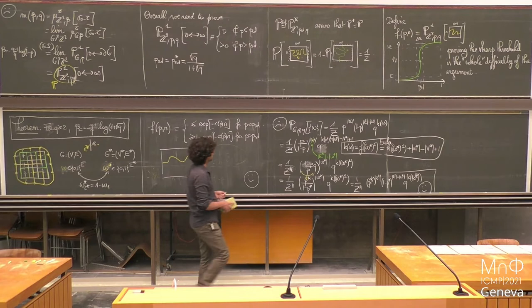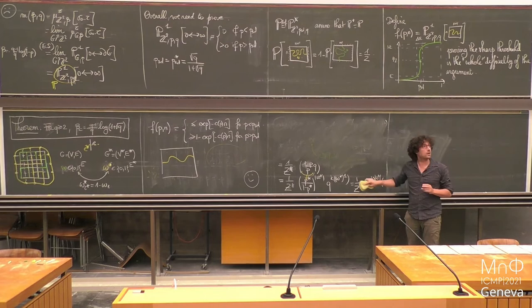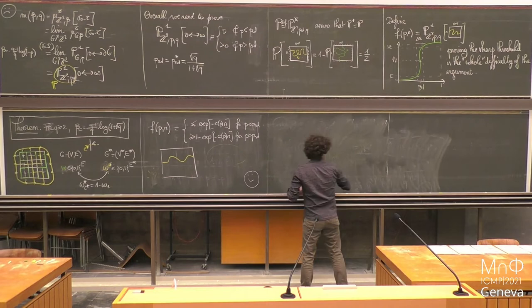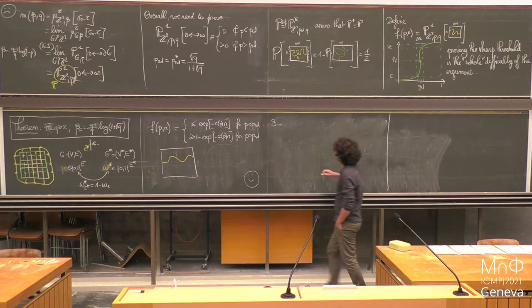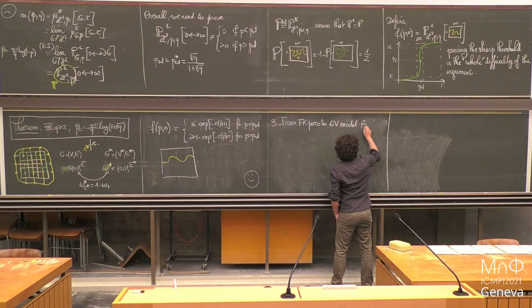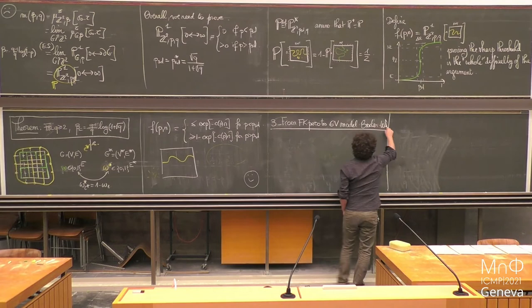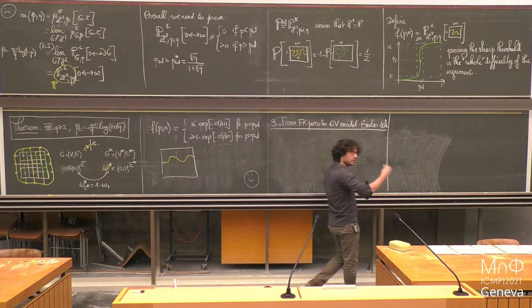I'm not going to give more details because I want to tell you a little bit about the Baxter-VU connection and time is flying. So let's turn to the third part: the connection between the six-vertex model and FK percolation. We are going to apply a sequence of mappings going from FK percolation to Baxter-VU.